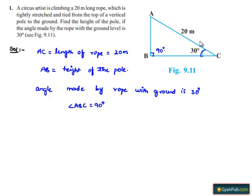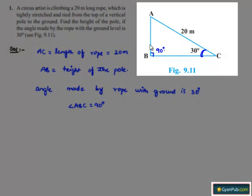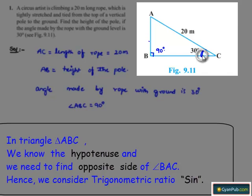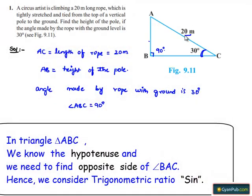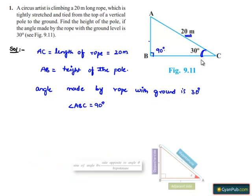Here we have the hypotenuse 20 meters and an angle and we need the vertical height of the pole. So as we need the opposite side to the angle 30 degrees and we have the hypotenuse, we can here apply the trigonometric ratio sine which is nothing but the opposite side by hypotenuse.